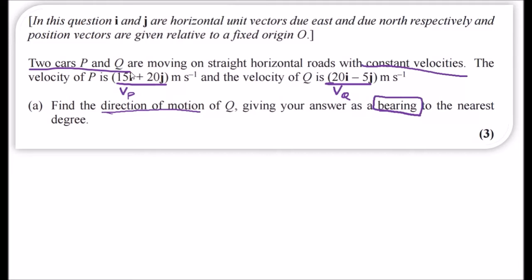Let's imagine a point here and get our north axis up here. The velocity is moving 20 across the i-axis and 5 down across the j-axis. So we need to find the angle, let's call this vector vQ because that's the velocity of Q.